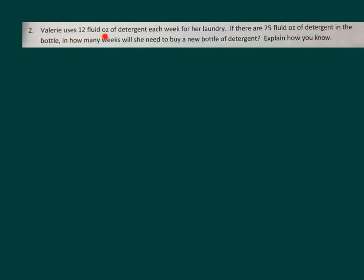Valerie uses 12 fluid ounces of detergent each week for her laundry. If there are 75 fluid ounces of detergent in the bottle, how many weeks will she need to buy a new bottle of detergent? Here's a case where we don't know the total amount of groups. We want to figure out how many 12s there are within 75.